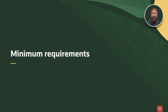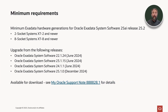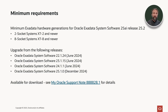Before we wrap up, let's talk about the minimum requirements for this release. The minimum hardware generation for Exadata System Software 25.AI release 25.2 is as follows: for two-socket systems, an X7-2 or newer is needed; for eight-socket customers, an X7-8 or newer is also required. You can easily upgrade to Exadata System Software 25.AI release 25.2 from Exadata System Software 22.1, 23.1, and 24.1 — any release starting from June of 2024 can be directly upgraded to this latest release. Exadata System Software 25.2 is available for download now, with all details available in My Oracle Support note 8888.2.1.